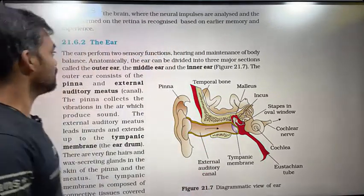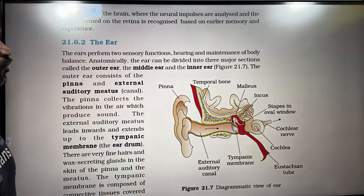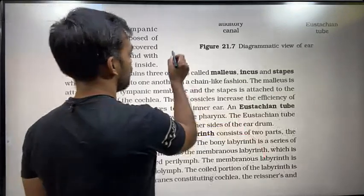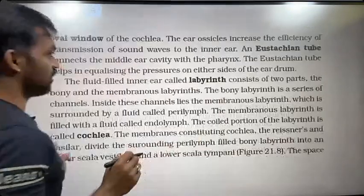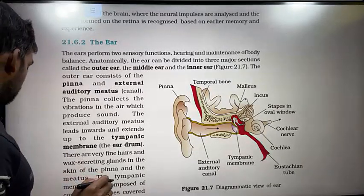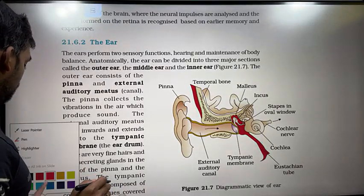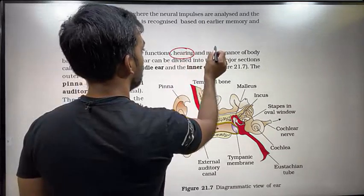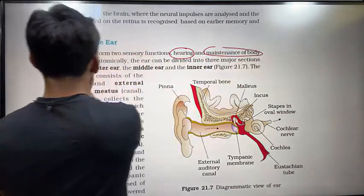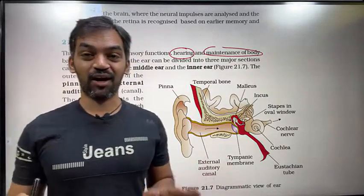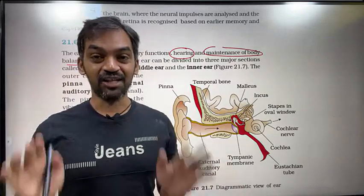The ear performs two sensory functions. One of those functions relates to the balance of the body — we have to control the balance of the body.